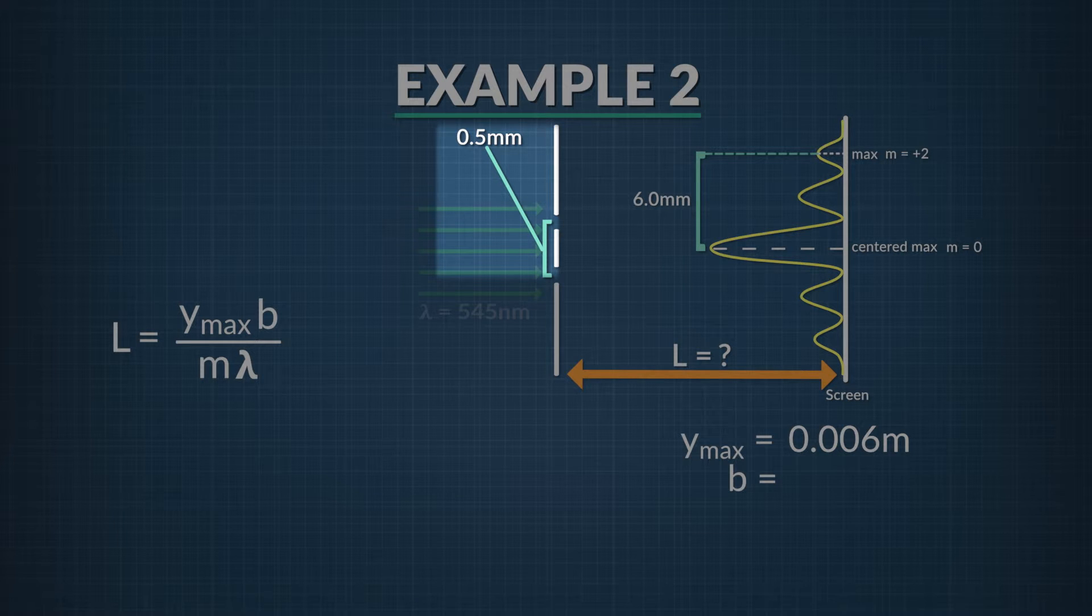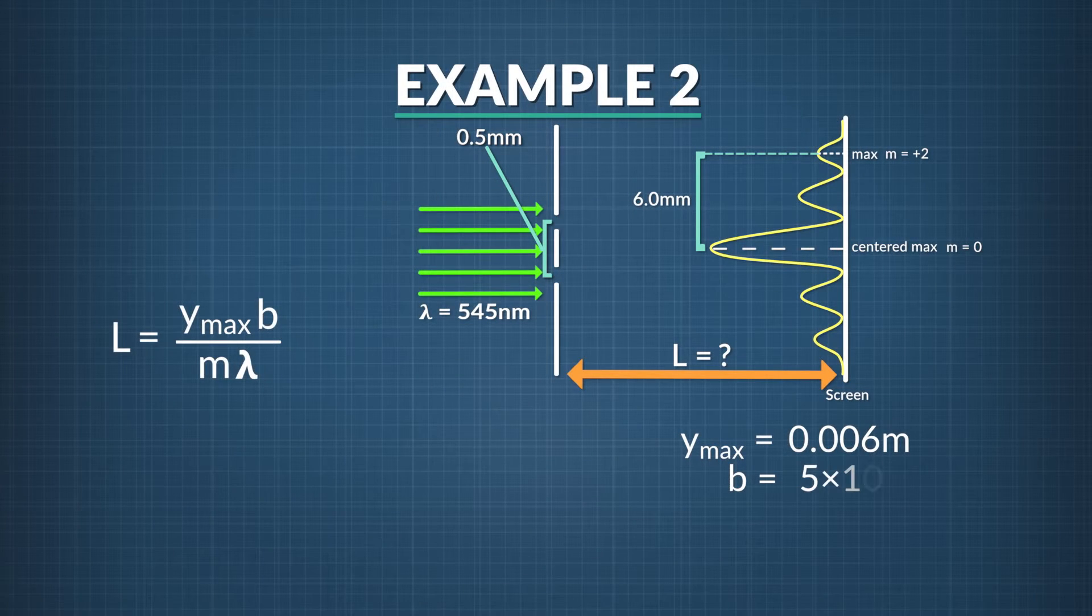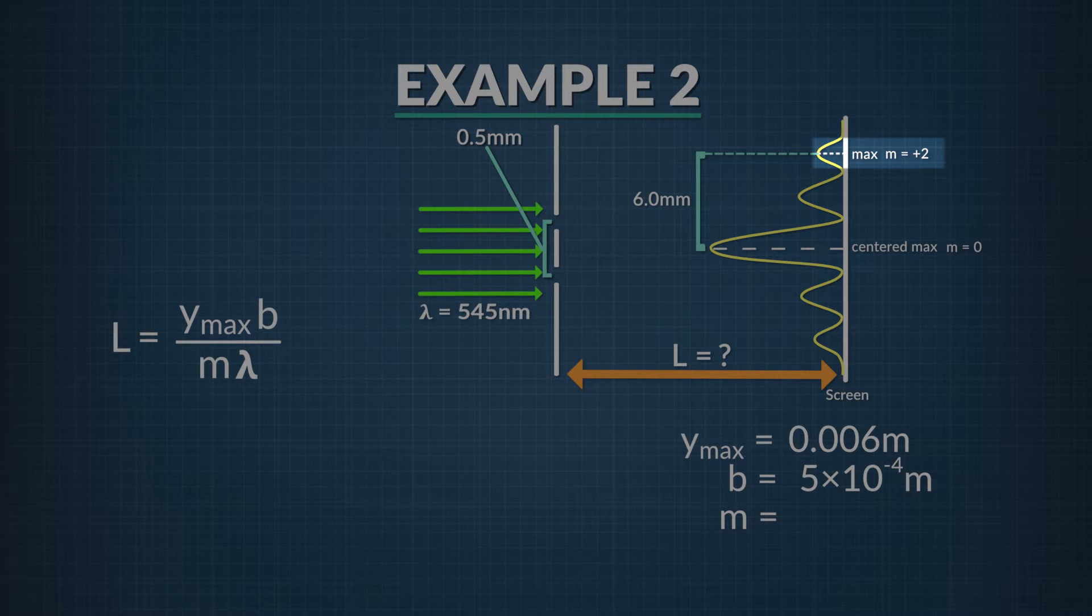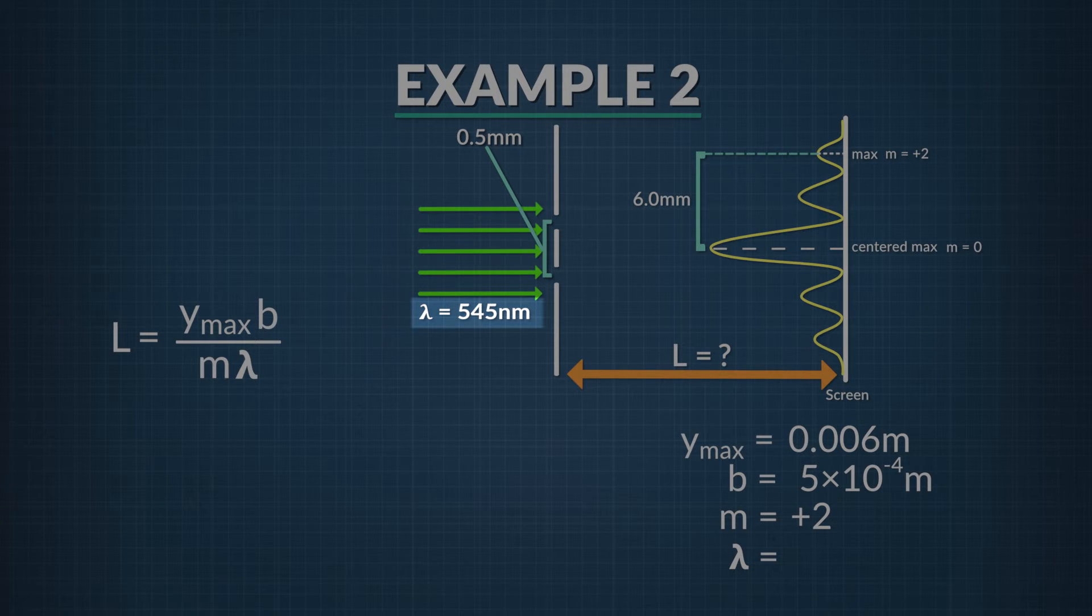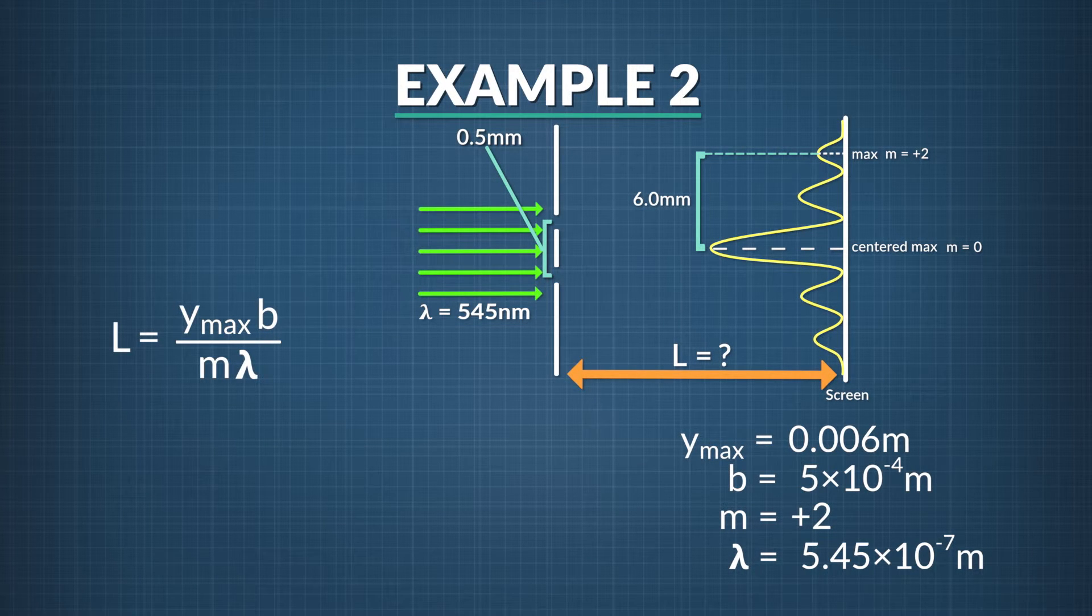B is the distance in meters between the two slits. That's 0.5 millimeters, or 5 times 10 to the negative 4th meters. Now what's m? Remember m is a whole number that tells us just which bright spot we're working with. The question stated that we measured the second bright spot above the interference pattern center. That means m equals positive 2 in this case. And finally the wavelength lambda. We're given that value. It's 545 nanometers, which is 5.45 times 10 to the negative 7th meters.